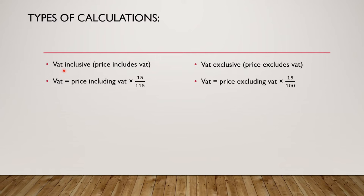VAT inclusive means the price of the item concerned includes VAT. So if I want the VAT amount, I'm going to say VAT is equal to the price including VAT times 15 over 115.